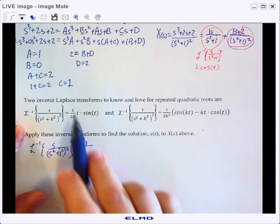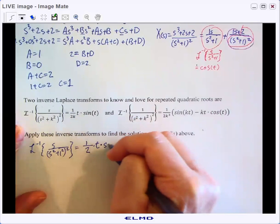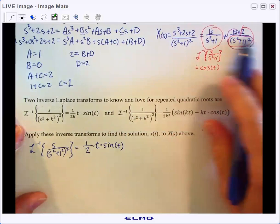So the inverse Laplace transform of S over S squared plus one quantity squared is going to be one over everything's the same, except now we've got K is a one. So one over two times K, which is one over two times T times the sine of T. So that's what this purple one will work out to be.